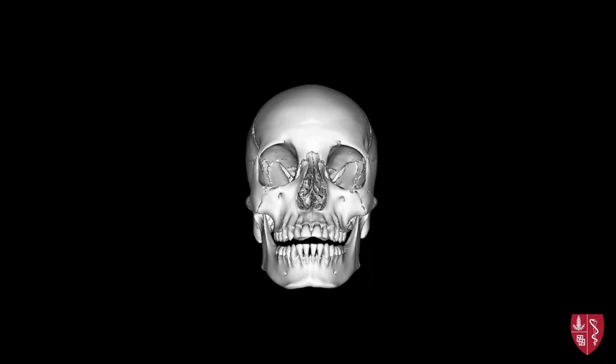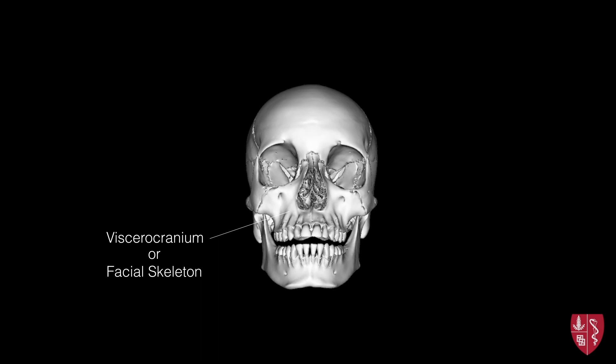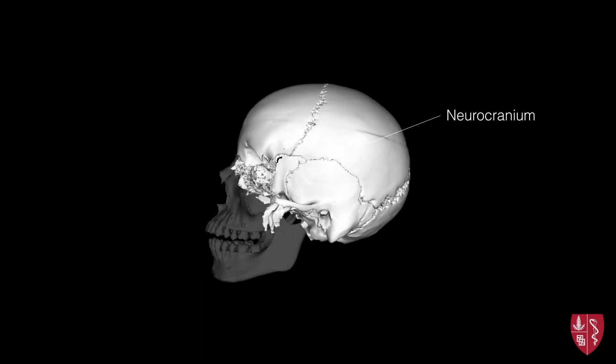The human skull can be subdivided into a viscerocranium or facial skeleton, as well as a neurocranium, otherwise known as the cranial vault or brain case.